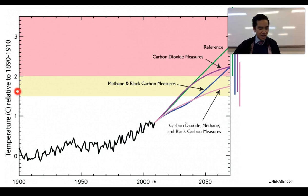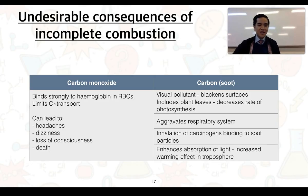In this slide I've just summarized the undesirable consequences of incomplete combustion. On the left we can see carbon monoxide binds strongly to hemoglobin in red blood cells. It limits oxygen transport. The concerns with this is that it can lead to headaches, dizziness, loss of consciousness, and potentially even death.